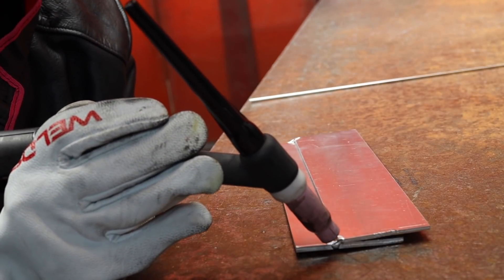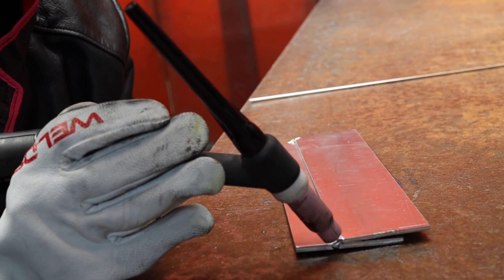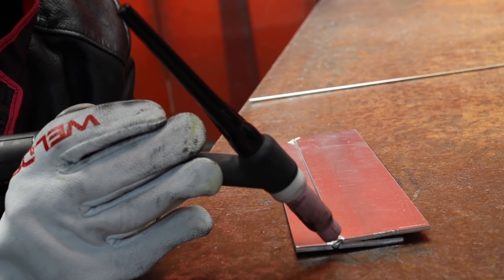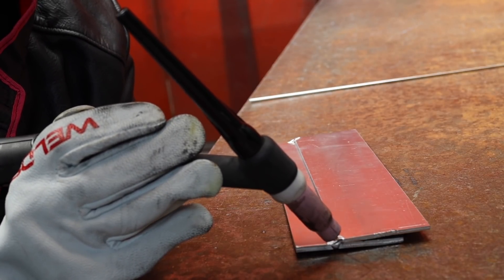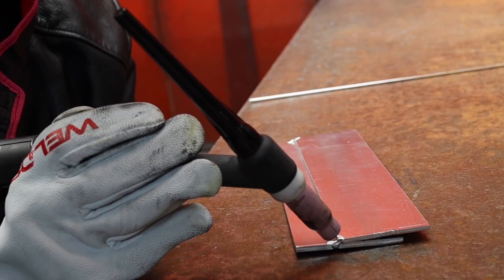So I'm going to be pointing three quarters of my arc at the bottom plate as this is where I want most of my heat to go and a quarter onto the top plate just to make sure it fuses. I'm using pulse for this as it helps the weld move along as well.